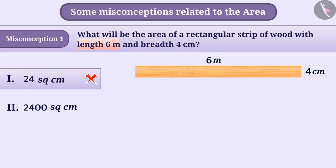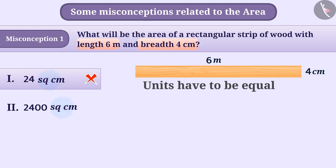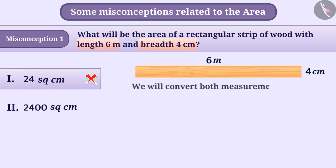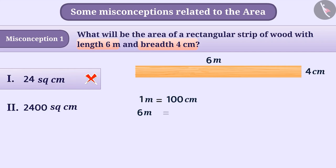Here the length is given in meters while the breadth is given in centimeters. First, we have to make both units of measurement the same. Since the area is given in square centimeters in both options, we will convert both measurements to centimeters. Since 1 meter equals 100 centimeters, 6 meters equals 6 × 100 = 600 centimeters. Since the breadth is already given in centimeters, we will not change it.